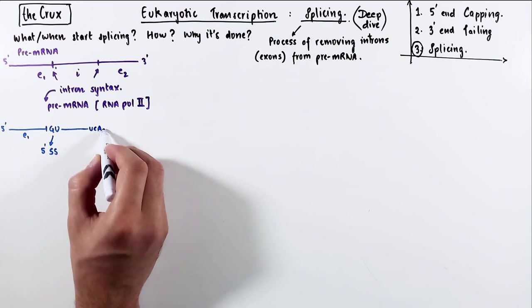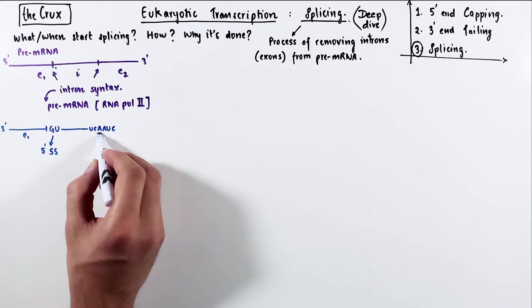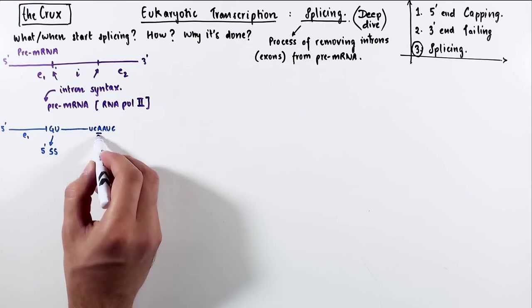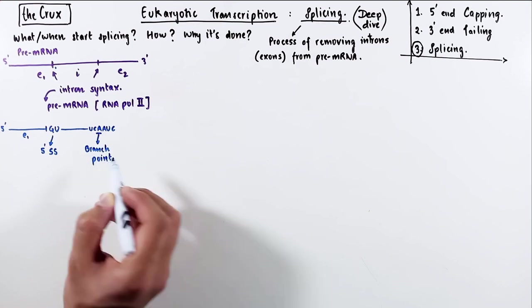And then the intron continues, and towards the end of the intron, you have a short sequence with a lot of adenines. And one of these adenines, any one in this sequence, is what we call the branch point.